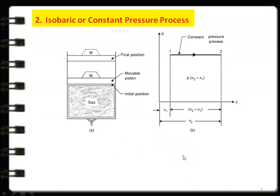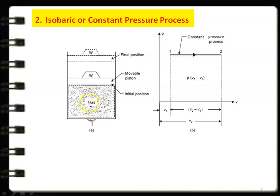The second process is the isobaric or constant pressure process. We use a piston-cylinder arrangement with a movable piston. Initially the piston is at position with pressure P1 and volume V1. Heat is added to the gas, and to maintain constant pressure, the piston moves upward. After heat addition, the piston reaches its final position. In the PV diagram, pressure remains constant, giving a horizontal line.